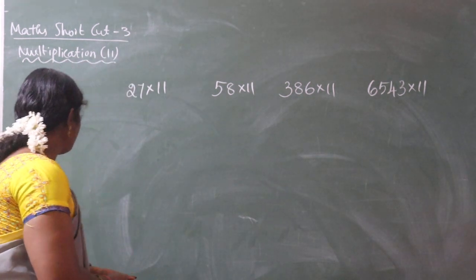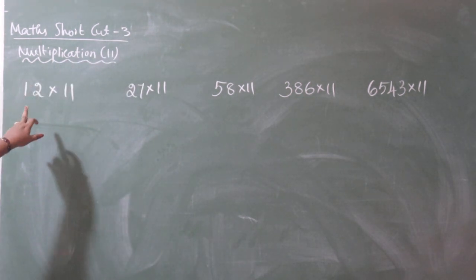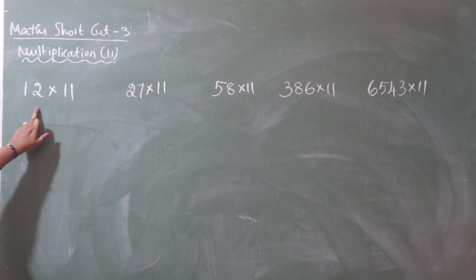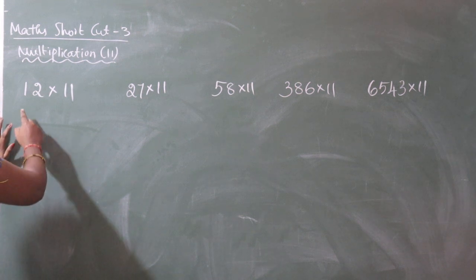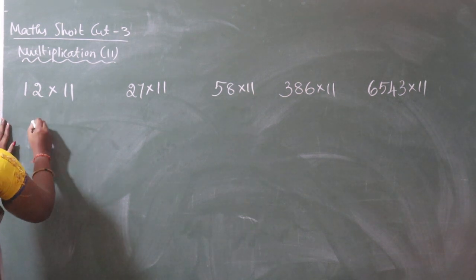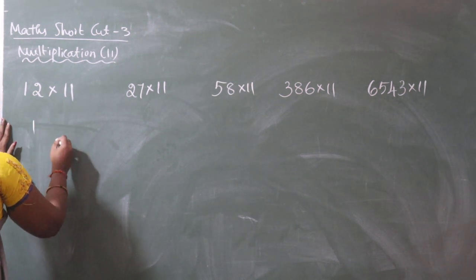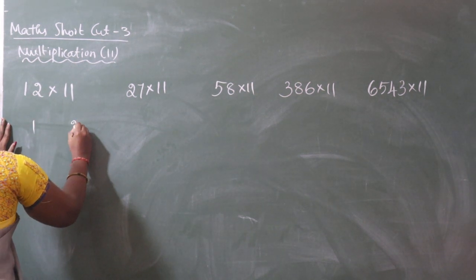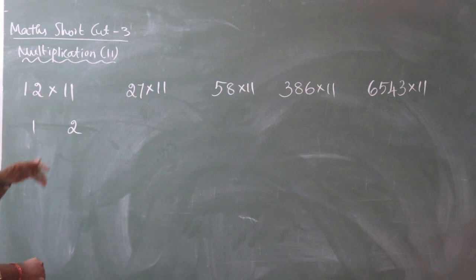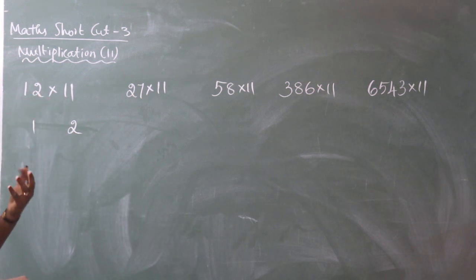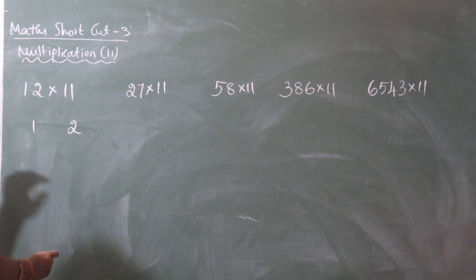Let's look at the first sum: 12 into 11. We write 1, then in the middle we place 1 plus 2, which equals 3, then write 2. That is the answer.